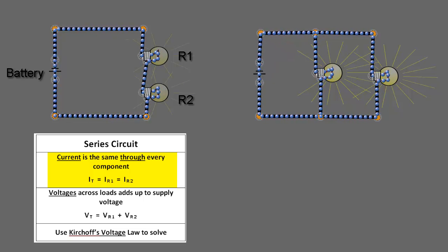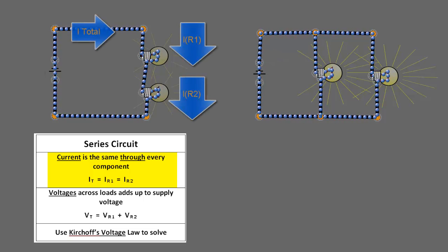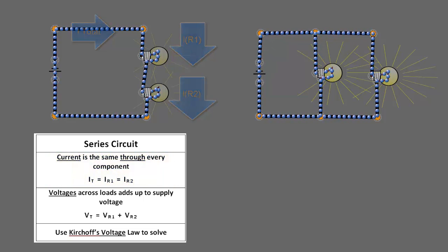So we can say that I_total equals I_R1, which also equals I_R2. They're all the same. So that's one characteristic of a series circuit.